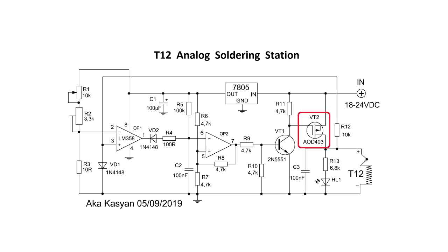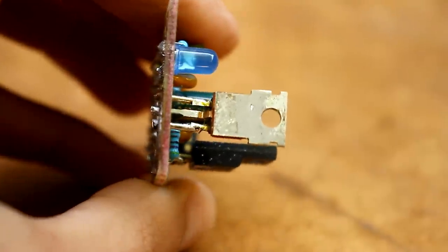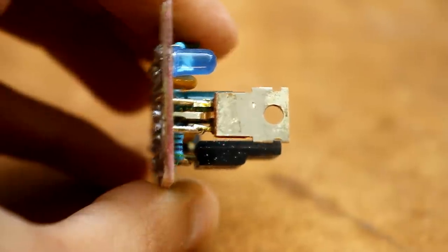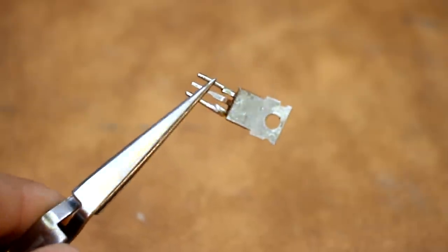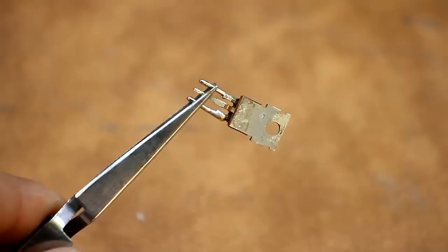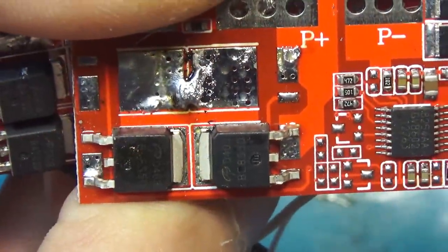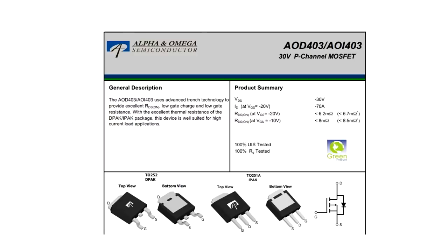There may be problems to find the P-channel transistor, although if there is a radio component store nearby, you can just go and buy it. I don't have such an opportunity, so I took the transistor from the protection board for Li-ion batteries.